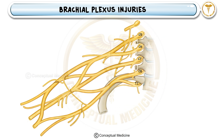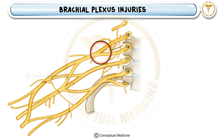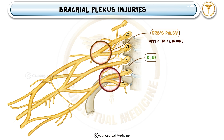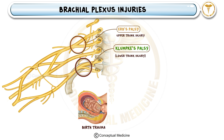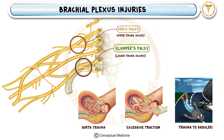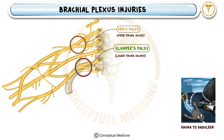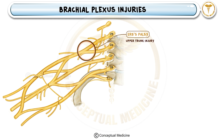The two major types of brachial plexus injuries are Erb's palsy, which affects the upper trunk, and Klumke's palsy, which affects the lower trunk. These injuries commonly occur due to birth trauma, excessive traction, or direct trauma to the shoulder. Let's break down each of them in detail.